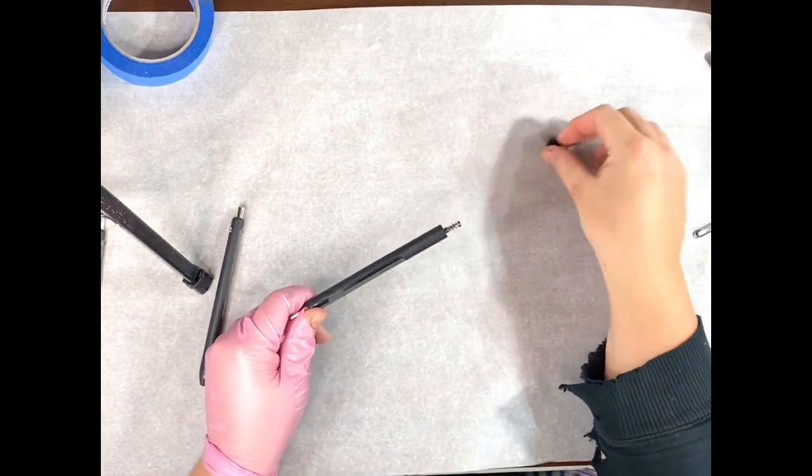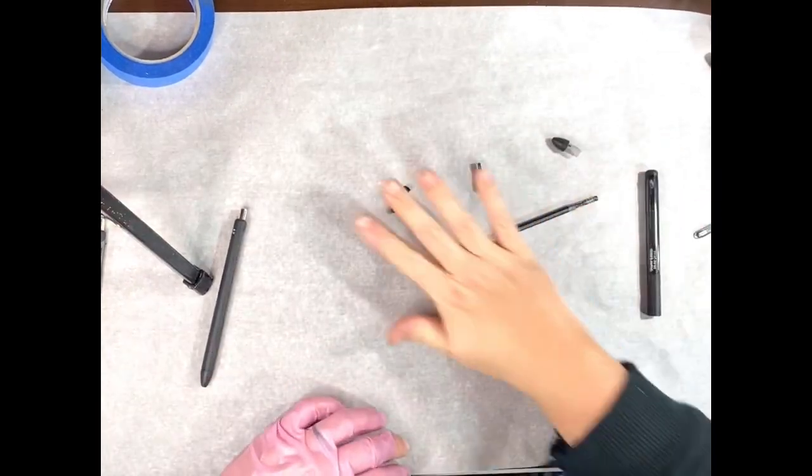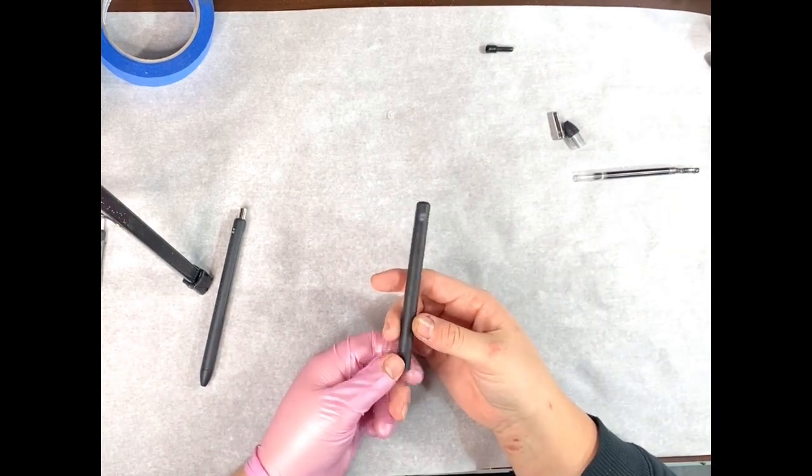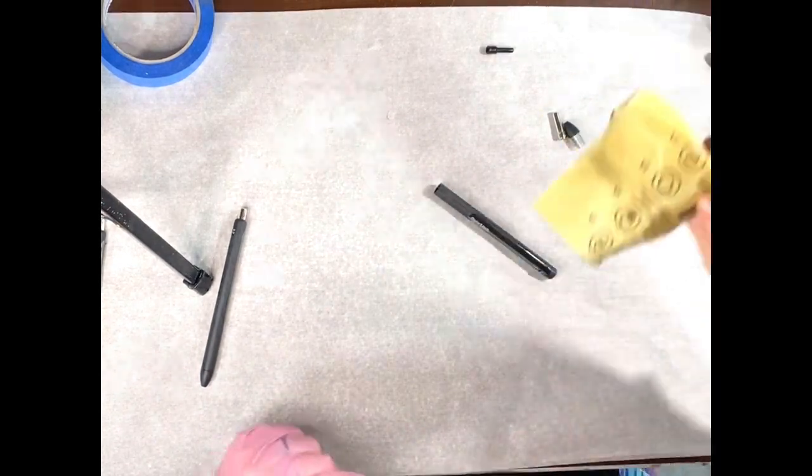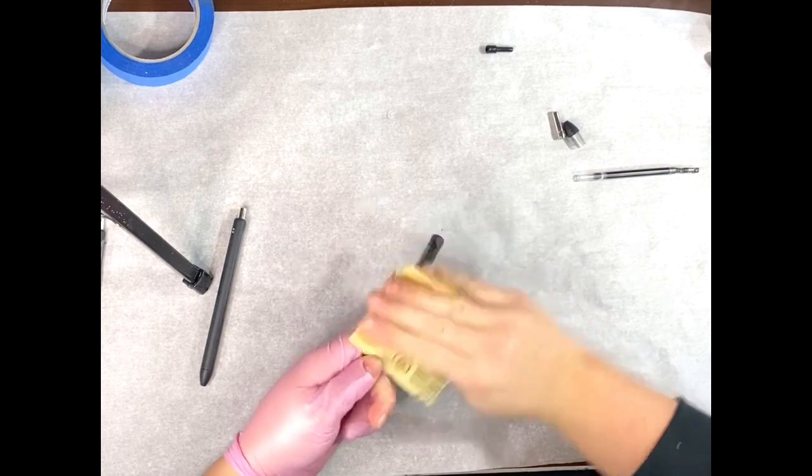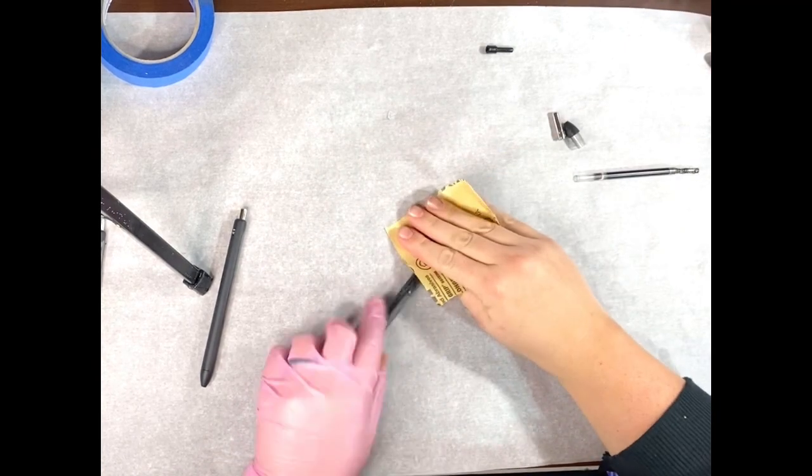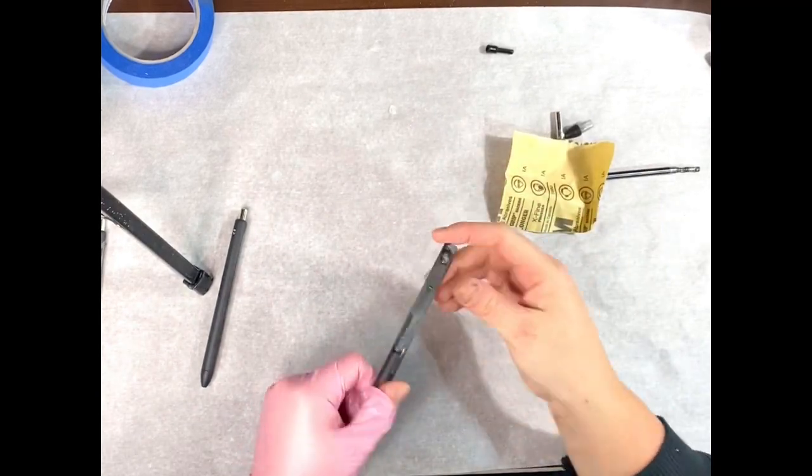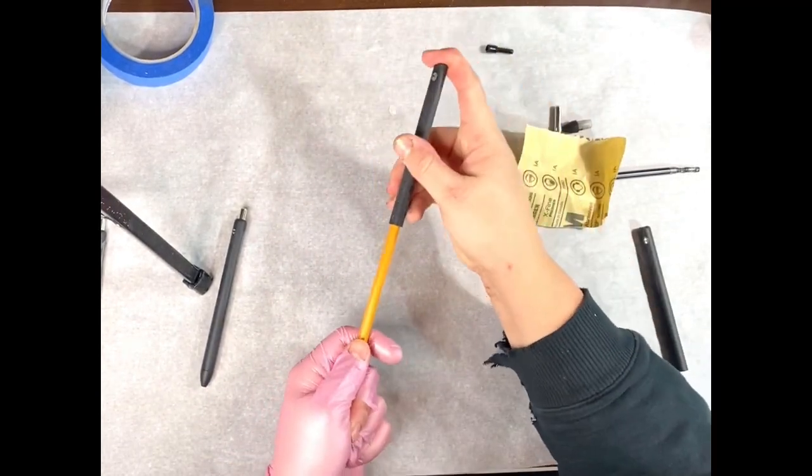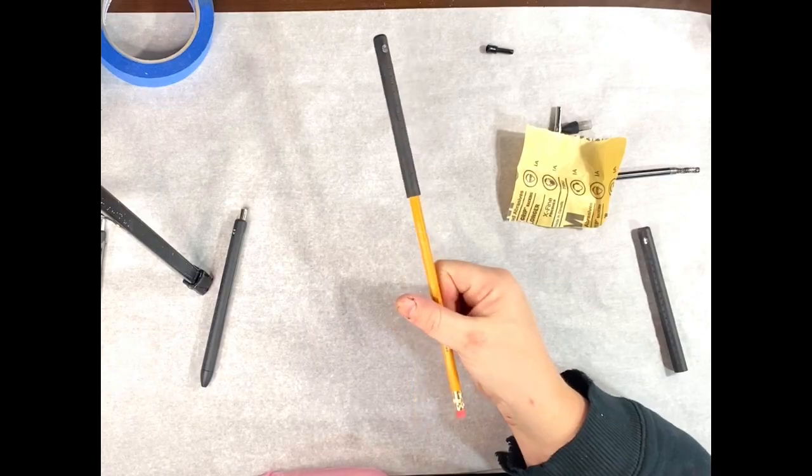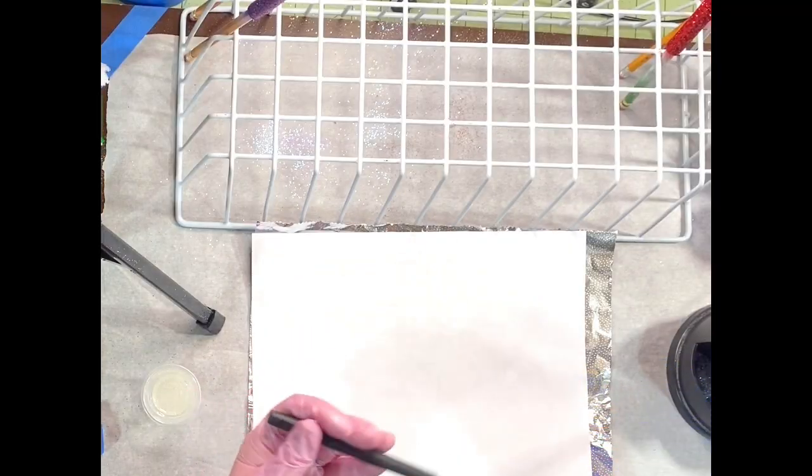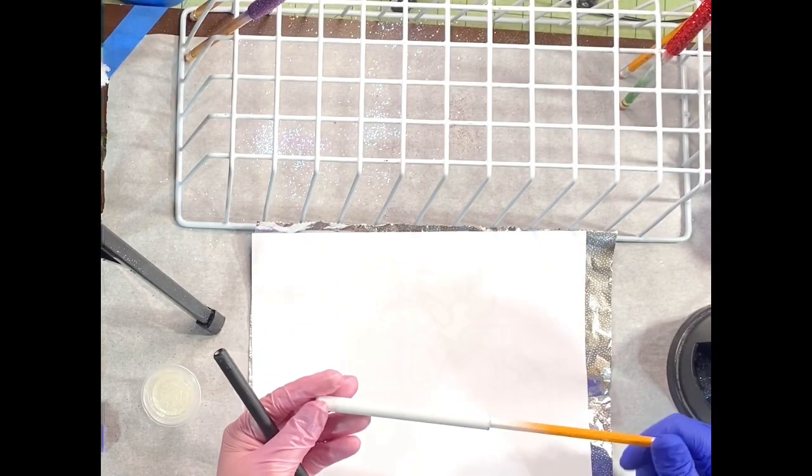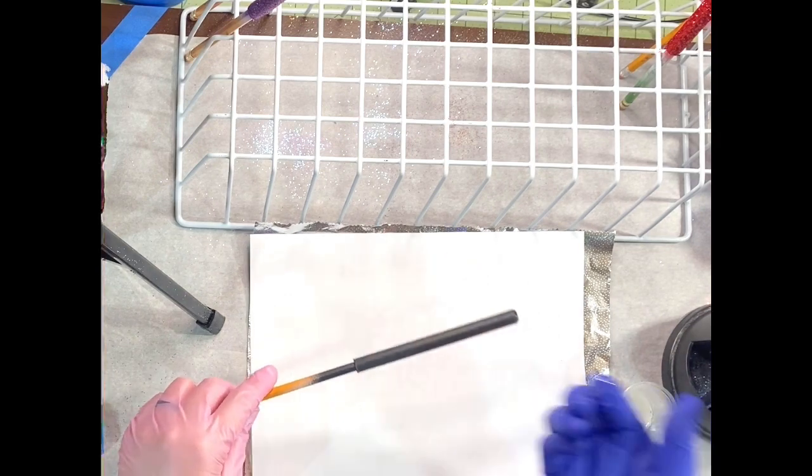Once that is done, you're going to sand your pen fully, just like you would do a tumbler. I had a bunch of number two pencils. They worked perfect. They fit nice and snug down into the pen. You can use a dowel rod if you like. I spray paint my pens exactly like I would do my tumblers, the base color of my glitter.